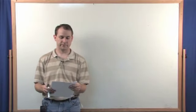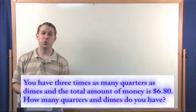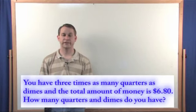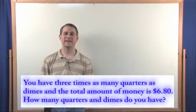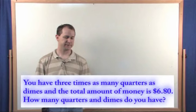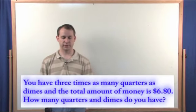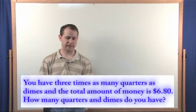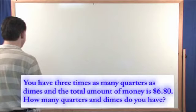First problem is you have three times as many quarters as dimes, and the total amount of money that you have is $6.80. How many quarters and dimes do you have? So you have some quarters and dimes, you have the total amount of money given is $6.80, and you have three times as many quarters as dimes, and you're trying to find out how many quarters and dimes that you have.